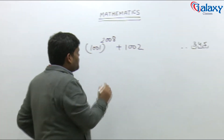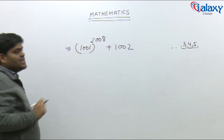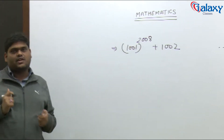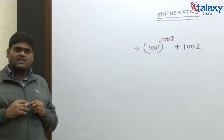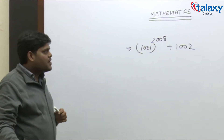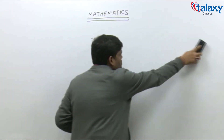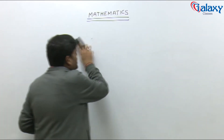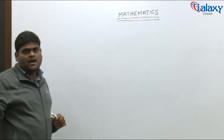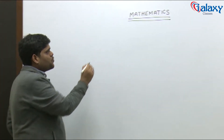Basically, we are going to find what digit will be at the unit place of a given expression, and we can solve this using the cyclicity concept. We will see what cyclicity actually means in this video. Suppose any number is given and we increase the power of that number — for example, 2.